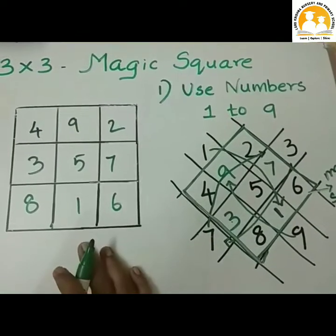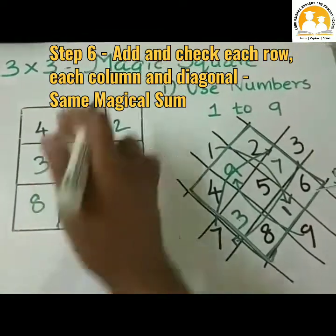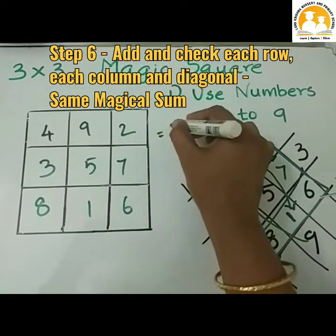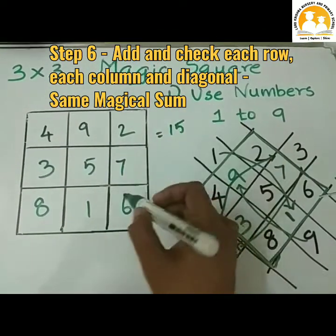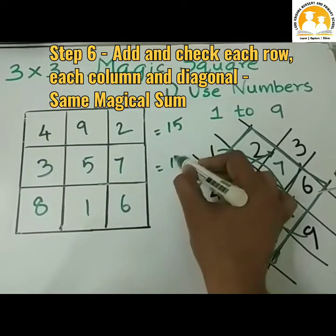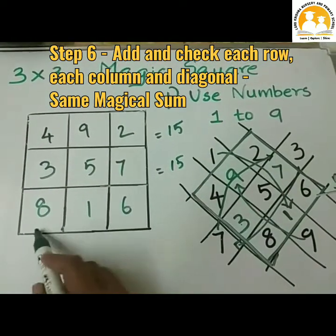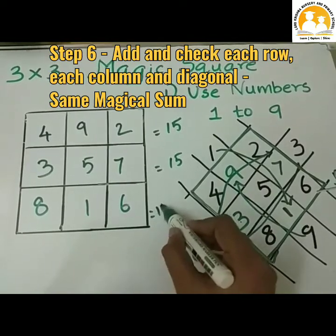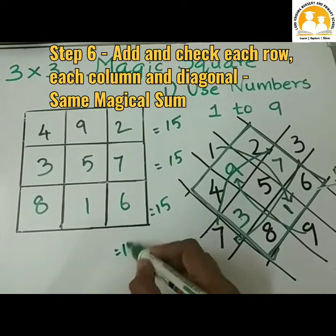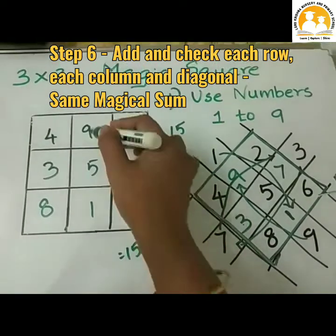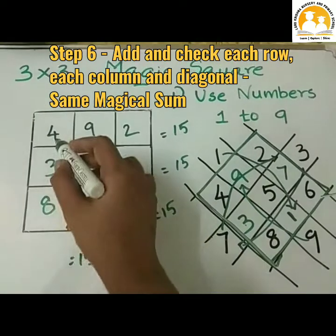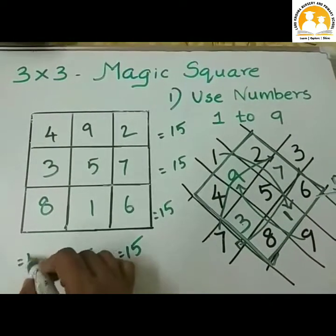We have formed a 3x3 magic square using numbers 1 to 9. Now we add all the rows: 4 plus 9 plus 2 is equal to 15. 3 plus 5 plus 7 is equal to 15. 8 plus 1 plus 6 is equal to 15. Adding columns: 2 plus 7 plus 6 is equal to 15. 9 plus 5 plus 1 is equal to 15. 4 plus 3 plus 8 is equal to 15.